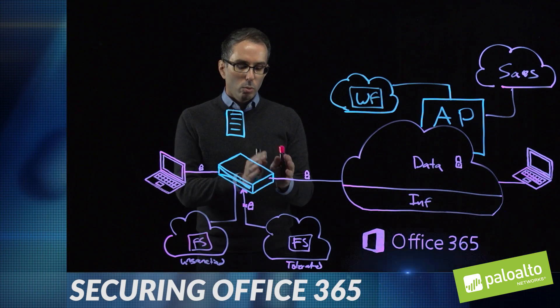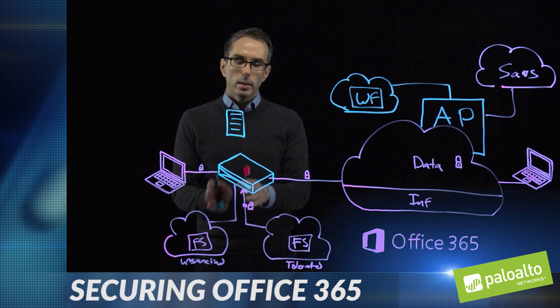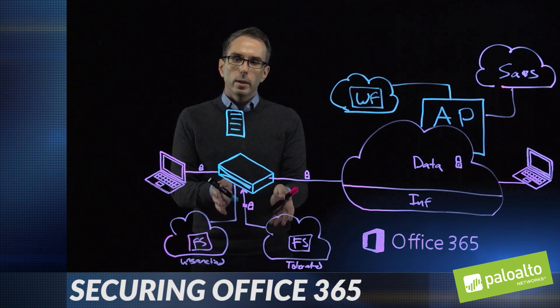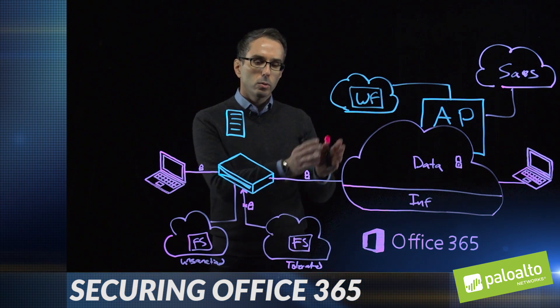After the migration has happened, you're able to move that application to a completely blocked unsanctioned application. This gives you full control over who uses which app, how they use it, and how you migrate them from an unsanctioned or tolerated application to a fully sanctioned application with Office 365. That's a quick look at Office 365, how we protect it, and some steps to control application usage and migrate users to Office 365. To find out more, go to paloaltonetworks.com.